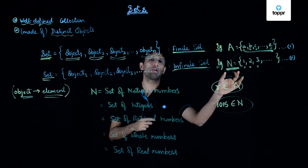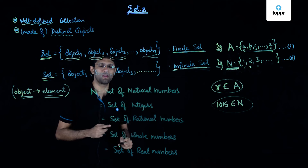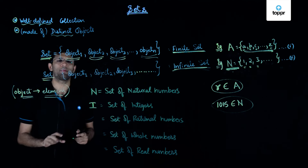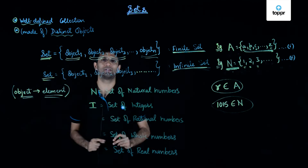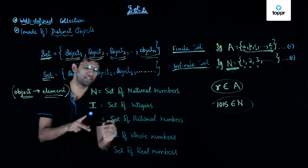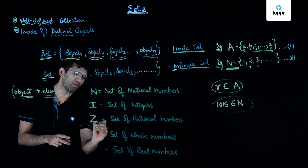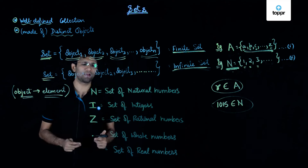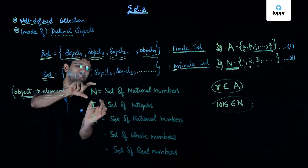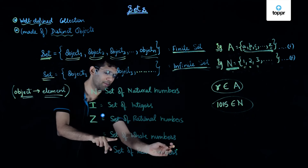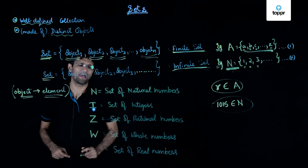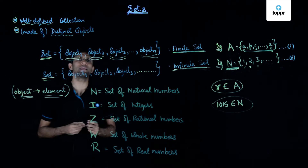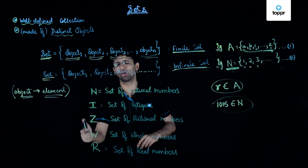The capital letter N always implies the set of natural numbers. In a similar manner, the set of integers is conventionally represented by capital letter I. The set of rational numbers is denoted by the letter Z. The set of whole numbers is always denoted by capital letter W, whereas the set of real numbers is denoted by capital letter R. We have now seen a few standard sets and the letters used to denote them conventionally.